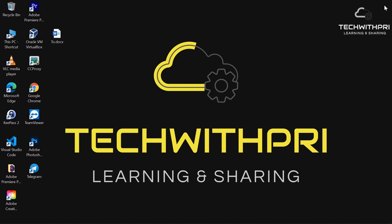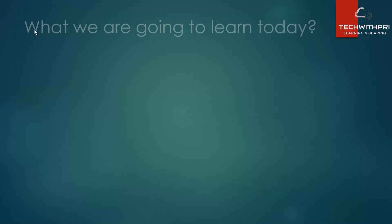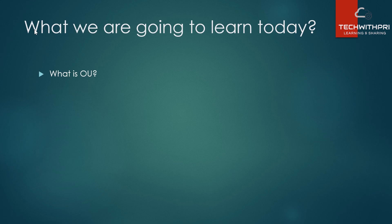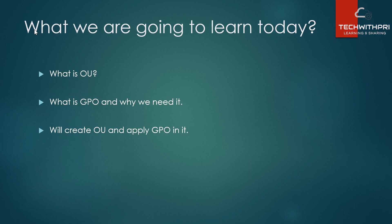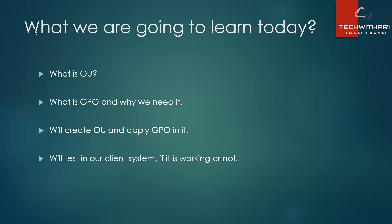In today's video, first we'll understand what an OU or Organizational Unit is, which is important because we'll be applying Group Policy here. Next we'll understand what GPO is and why we need it. Then we'll create an Organizational Unit and apply a Group Policy Object to it, and finally we'll test it on our client system.